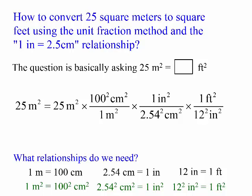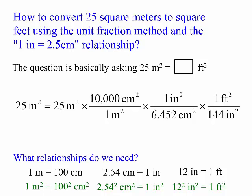If you multiply it, 100 times 100 is 10,000, 2.54 times 2.54 is 6.452, and 12 times 12 is 144. Meter square cancels with meter square, centimeter square cancels with centimeter square, and inch square cancels with inch square.